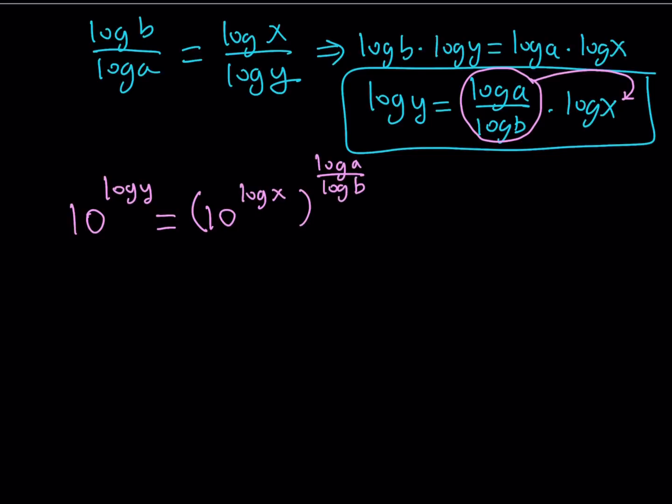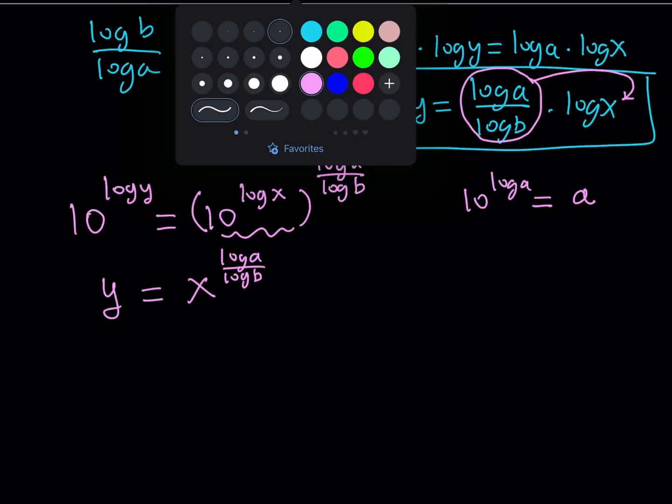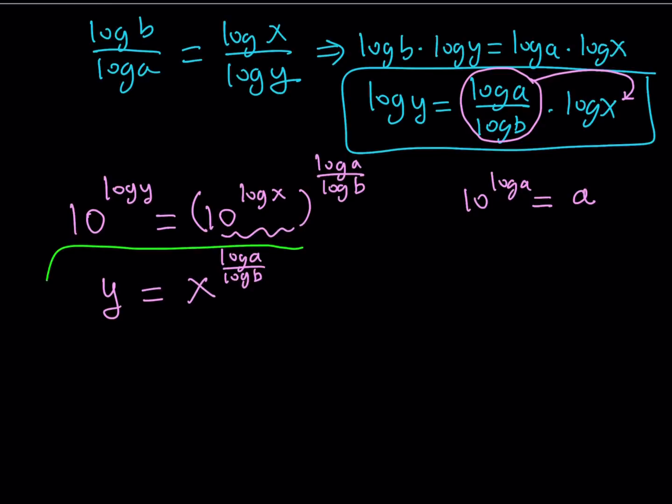Now here's one thing to remember. 10 to the power log something is equal to that thing because if you think about it, I think this came up in another video as well. But this is very easy to prove. You can just call log a equals something and then go with the definition. So 10 to the power log y is going to equal y. And this is going to equal x. So I can write y in terms of x, which is the critical part of the solution.